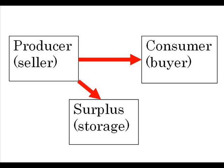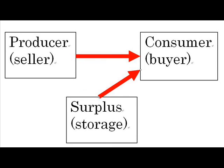What happens if demand exceeds supply? Consumers are buying more than is being produced. It means that they are not only buying what the producer is producing, but also buying what is in storage, depleting the surplus.